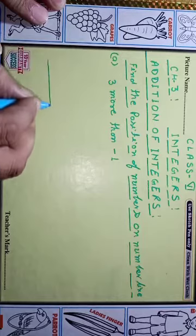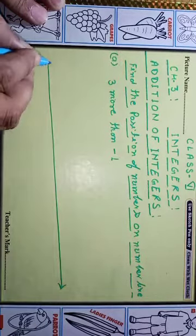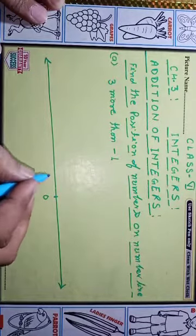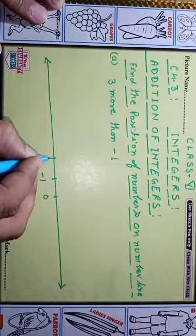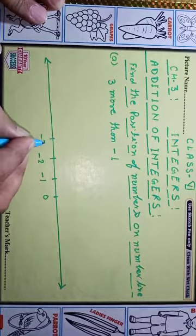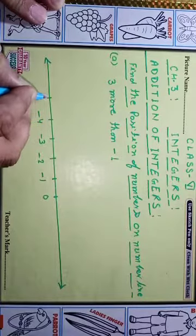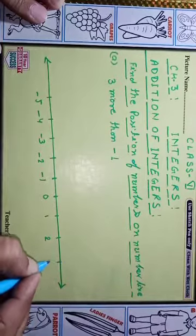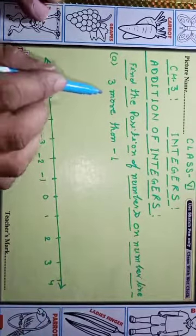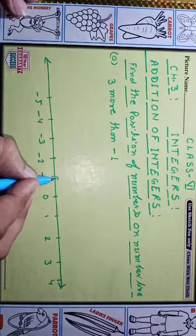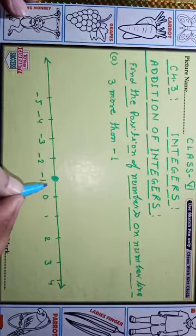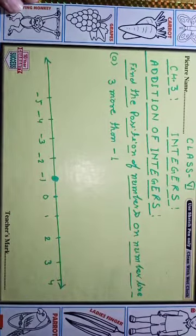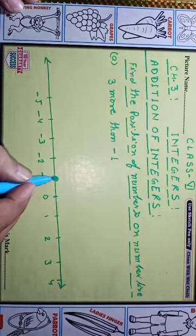Three more than minus one. First, make the number line. On the number line we have origin, minus one, minus two, minus three on the left, and one, two, three, four, five on the right. Minus one is here on the number line, and three more means if more, we go to the right side.